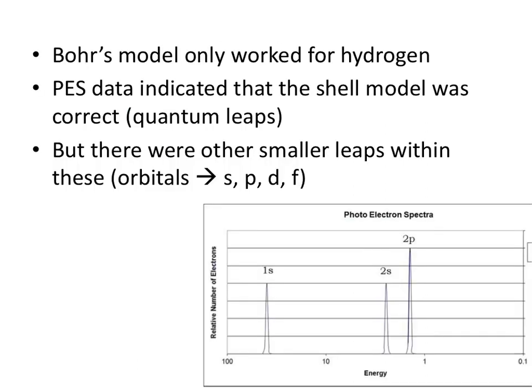Bohr's model, while great, didn't work for anything but hydrogen — beyond hydrogen it did not work. Some people started doing photoelectron spectroscopy, or PES, and this data indicated that there were further smaller leaps within each orbit or ring. They figured out these were called orbitals. This is where we get what we'll learn later about as the S, P, D, and F orbitals — further arranged within the rings.